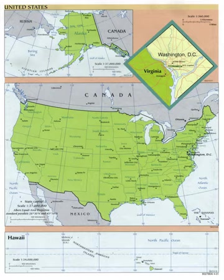The government of each of the five permanently inhabited U.S. territories is also modeled and organized after the federal government. Each is further subdivided into smaller entities. Puerto Rico has 78 municipalities, and the Northern Mariana Islands has four municipalities. Guam has villages, the U.S. Virgin Islands has districts, and American Samoa has districts and unorganized atolls.